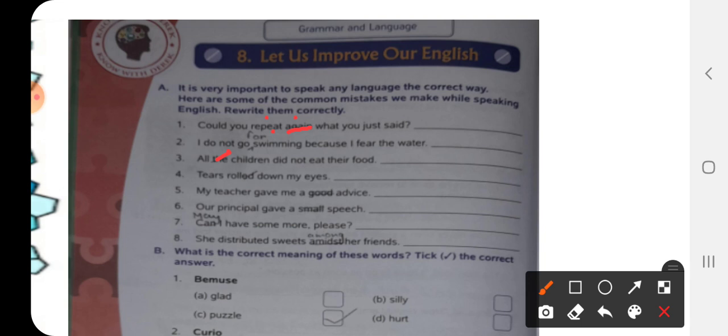Number four, tears rolled down my eyes. When you are saying tears rolled down my eyes, it's a simple sentence. We are not making it past. So we will just write tears roll down my eyes.